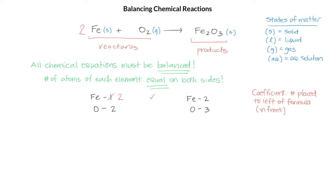Now let's look at the oxygen. We have 2 oxygen on the left and 3 oxygen on the right. So let's try putting a 3 in front of the oxygen on the left, which would give me 6. And if we put a 2 on the iron(III) oxide on the right, that would also give me 6 oxygen, which means our oxygen is balanced. But putting this 2 in front of the iron(III) oxide affects the number of iron as well, so we must change that to 4, which means now my iron isn't balanced anymore.